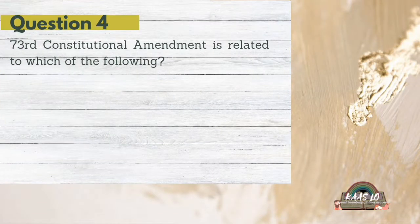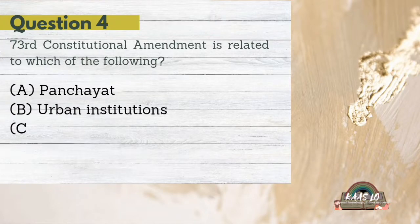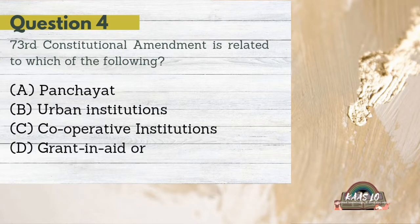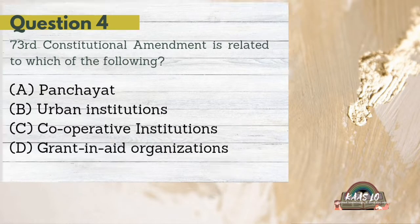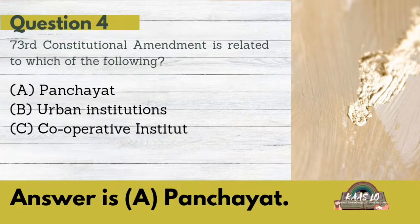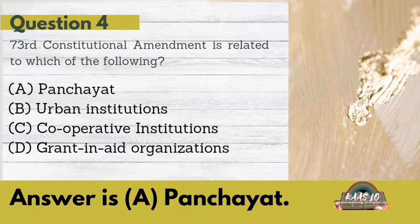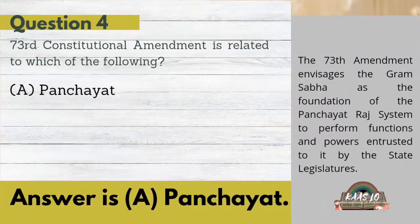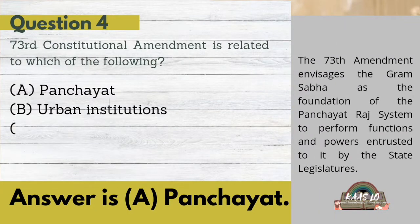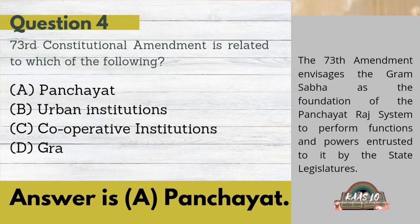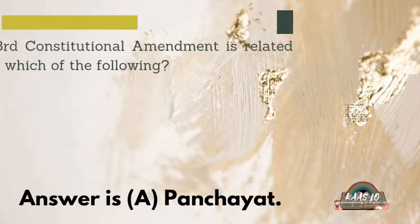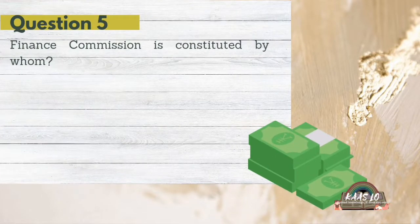The next question as you can see on the screen: The 73rd Constitutional Amendment is related to which of the following? Options: A. Panchayat, B. Urban Institutions, C. Cooperative Institutions, D. Grant-in-aid Organizations. The answer is A. Panchayat. This 73rd Amendment envisages the Gram Sabha as the foundation of the Panchayat Raj system in India, to perform functions and powers entrusted to it by the state legislatures.